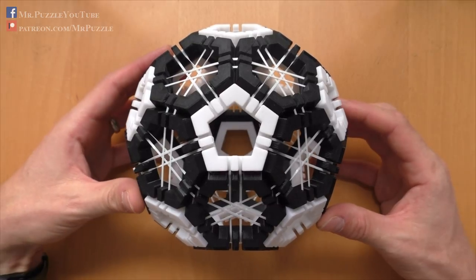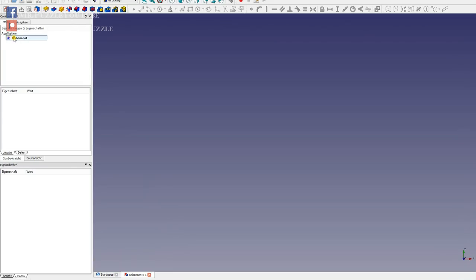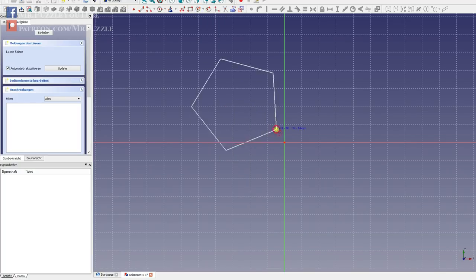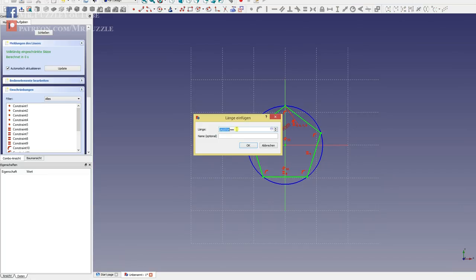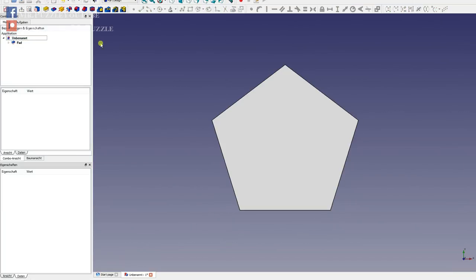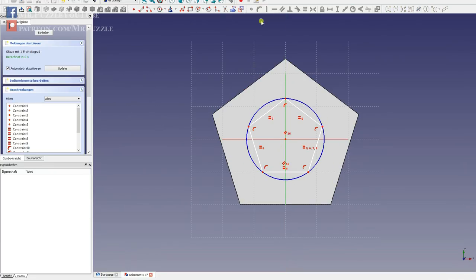So, how did I do this? Or how did I create the single parts? For the 3D design, I used the free software FreeCAD. It's a completely free CAD software, parametric software, and I created here the two designs for the hexagon and for the pentagon shape.